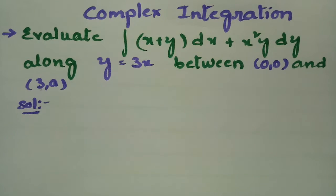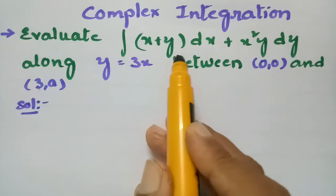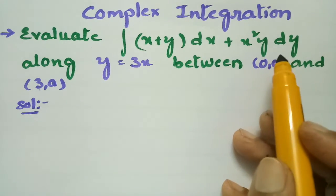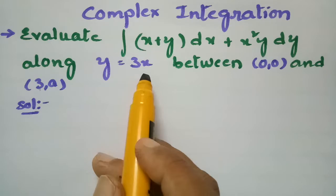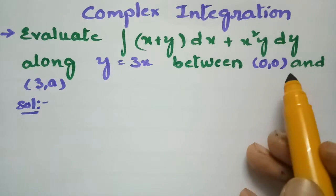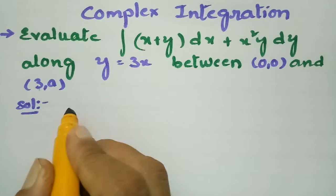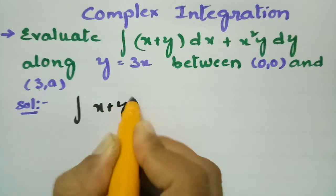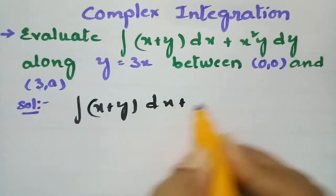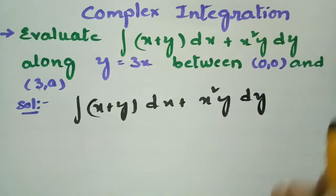This problem is from complex integration. In this video we are going to evaluate the integral of (x + y)dx + x²y dy along y = 3x between the points (0, 0) and (3, 9). The given integral is the integral of (x + y)dx plus x²y dy.